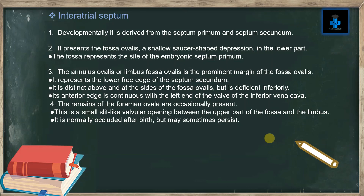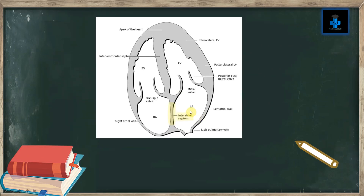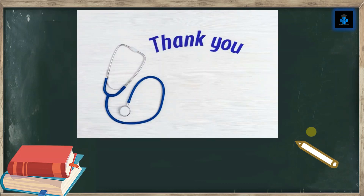The remains of the foramen ovale are occasionally present as a small slit-like valvular opening between the upper part of the fossa and the limbus. It is normally occluded after birth but sometimes may persist. On the diagram: the interatrial septum, the left and right atrial valves, the tricuspid valve, the mitral valve, and the apex of the heart are all visible.